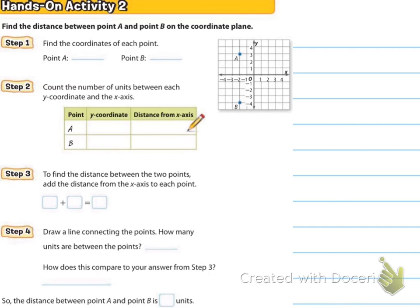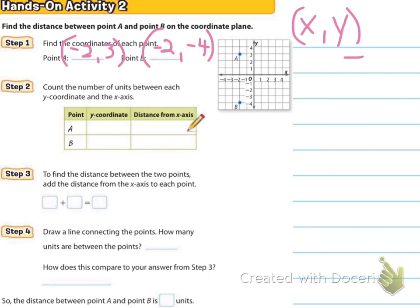For point A, we go over to negative two and up to positive three, giving us negative two comma three. For point B, we go over to negative two and down to negative four, giving us negative two comma negative four. The y-coordinates are three and negative four. The distance from the x-axis to A is three, and the distance from the x-axis to B is four. Notice we just found the absolute values of both y-coordinates — that's the distance away from the x-axis.